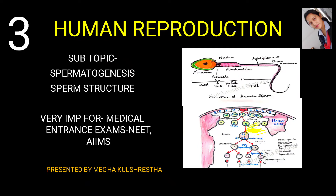Hi to all of you watching my video. I am Meghan. Today we will cover spermatogenesis and sperm structure. This is part three of human reproduction. Before going through this chapter, just see my previous video so that you can easily understand these topics. In spermatogenesis, many terms are there like spermiation, primary spermatocyte, secondary spermatocytes, and so on — many of you get confused in these terms.